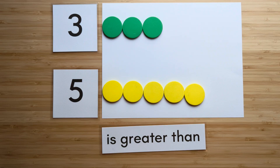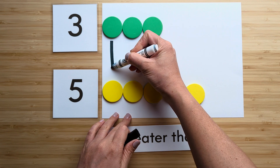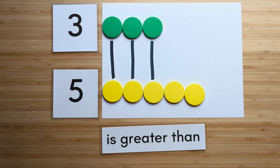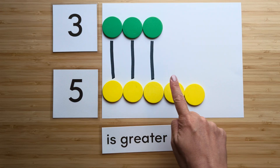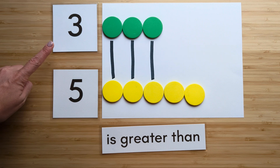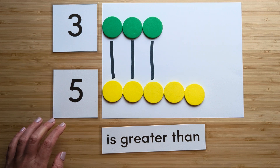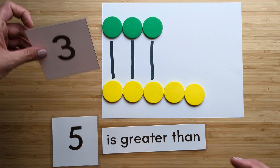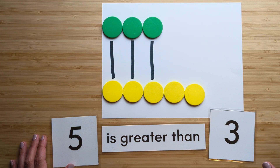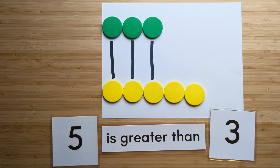Now let's compare. Match. Five has extra. Five is greater than three. Nice job. Clear off your boards to try the next one.